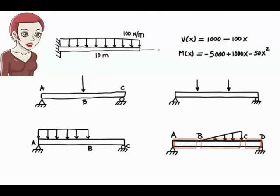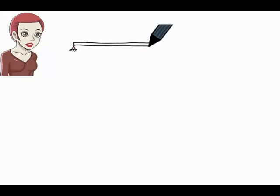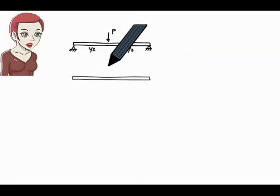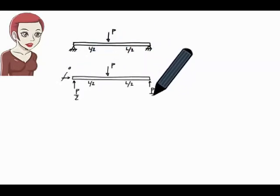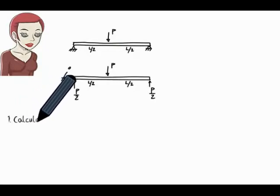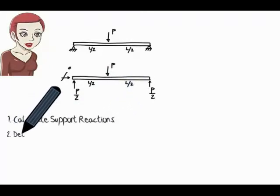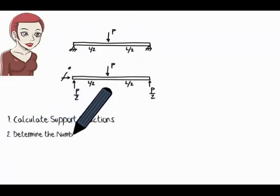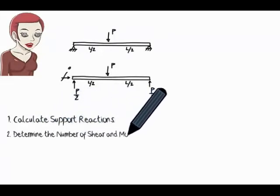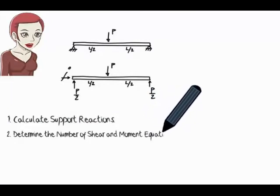Now that we know it may be necessary to have multiple equations for representing shear and moment in beams, let's talk about how we should go about formulating such equations. Given a beam, we always start by calculating its support reactions — that is step one. Step two is to decide how many shear and moment equations we need, that is, how many segments the beam is divided into by the loads.